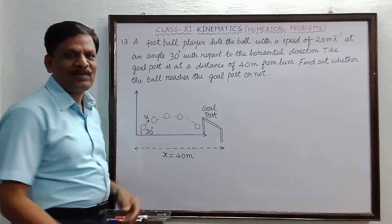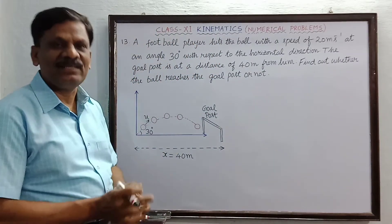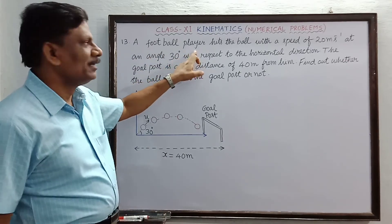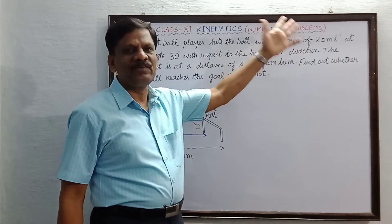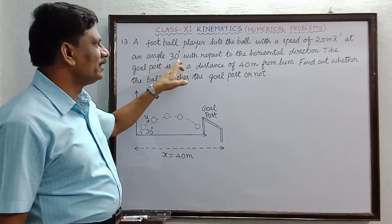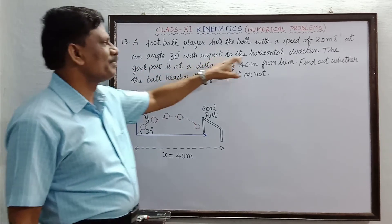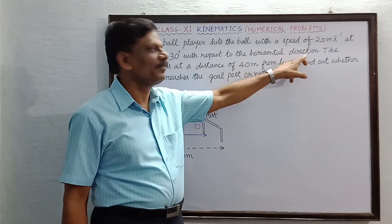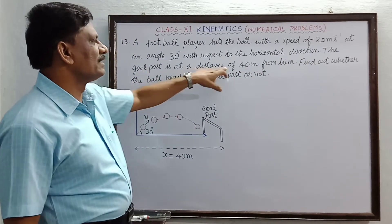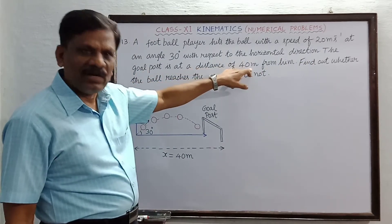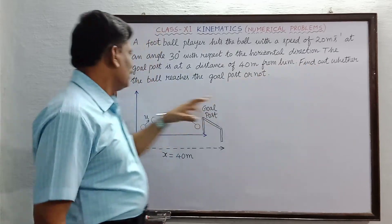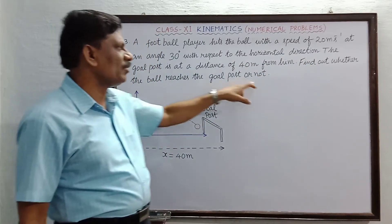Problem number 13: A football player hits the ball with a speed of 20 meters per second at an angle of 30 degrees with respect to the horizontal direction. The goal post is at a distance of 40 meters from him. Find out whether the ball reaches the goal post or not.